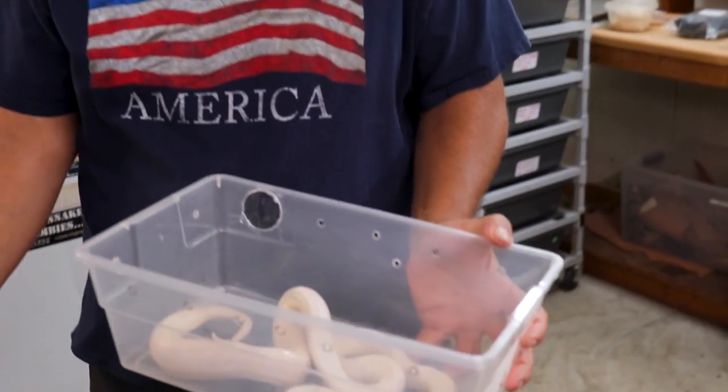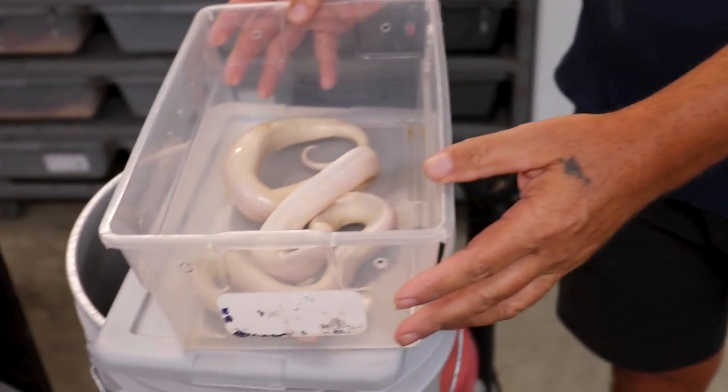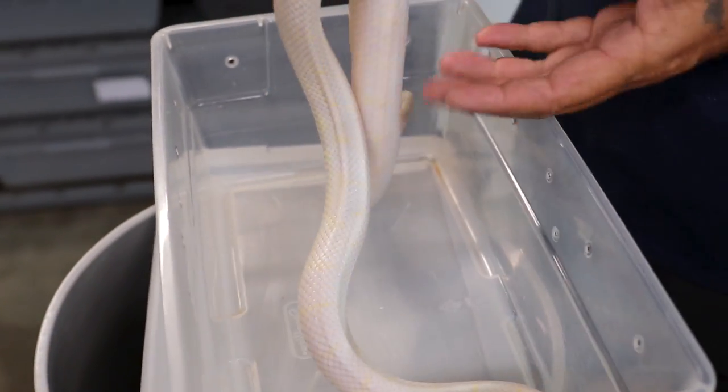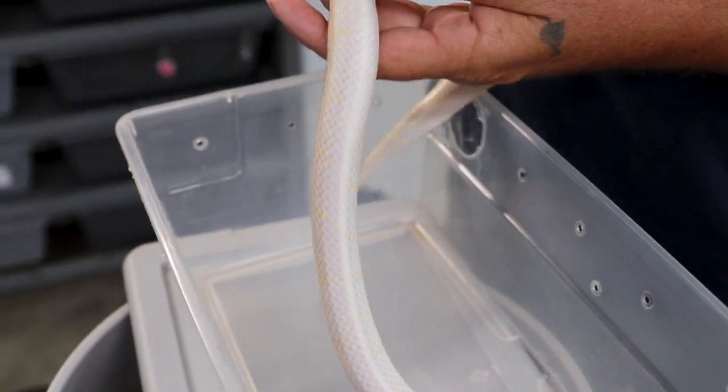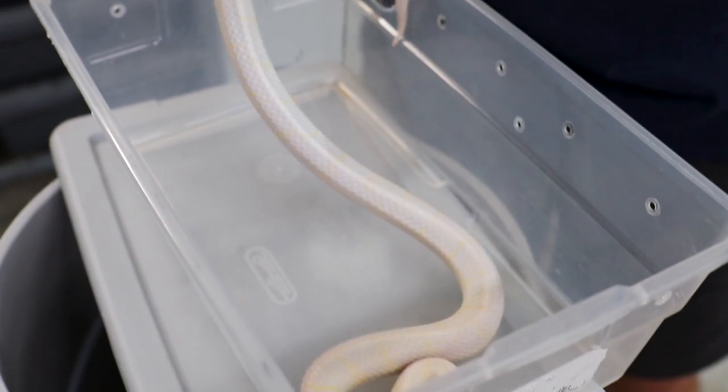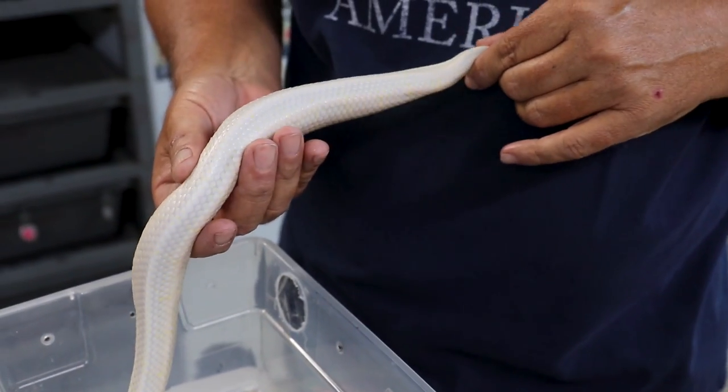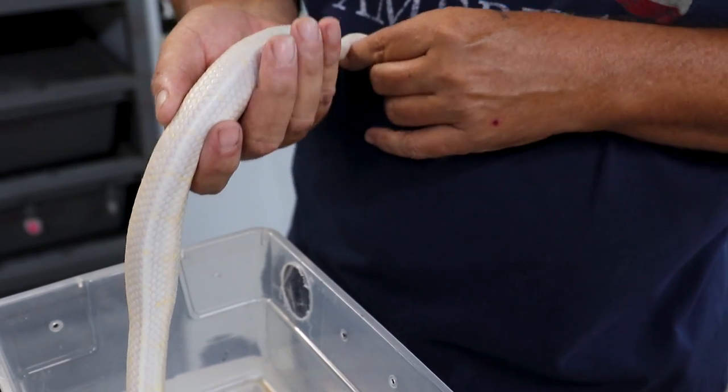So every now and then we have a situation come up when you're breeding reptiles where things don't go according to plan. Today is such one of those days. We are dealing with this little albino desert king and she recently laid a clutch of eggs, which is why she's really slim, but she's got a few more eggs in her and it seems like she has been bound up.